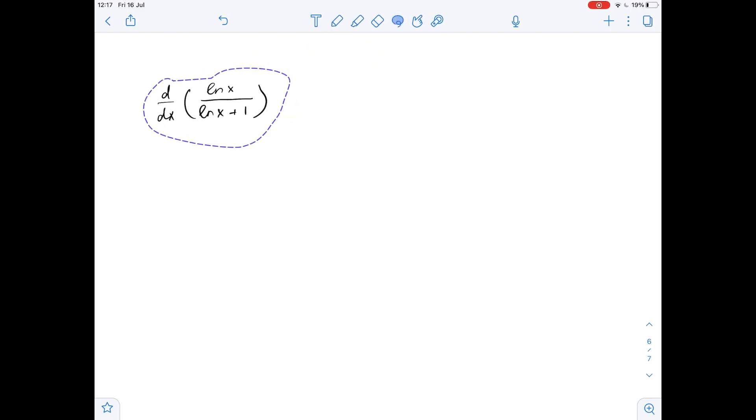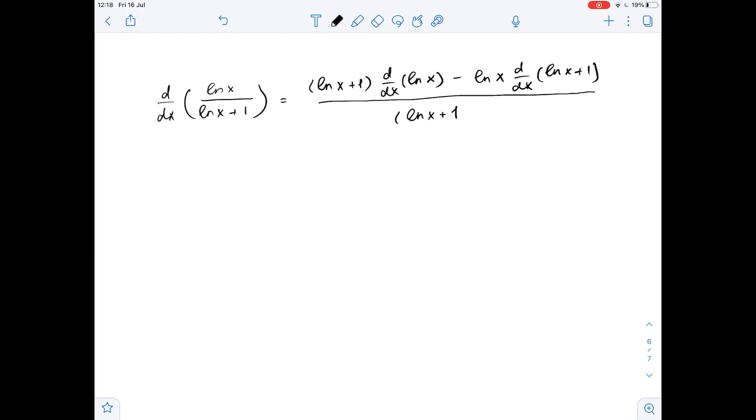So, this equals ln of x plus 1 multiplied by derivative of ln of x with respect to x minus ln of x multiplied by derivative of ln of x plus 1 with respect to x. And here we have over ln of x plus 1 squared.